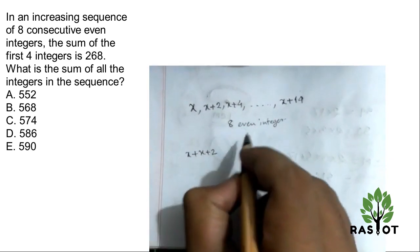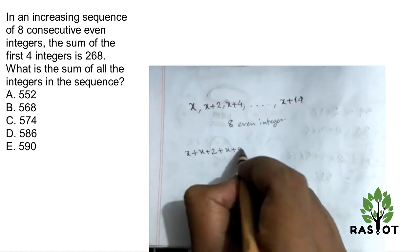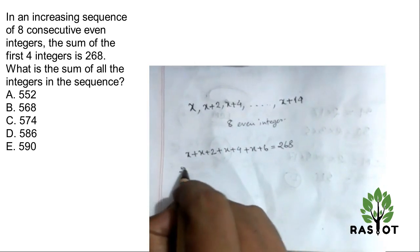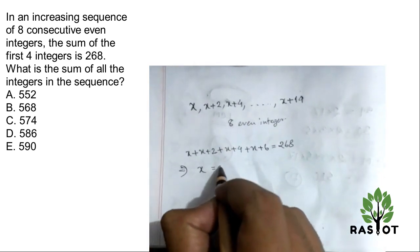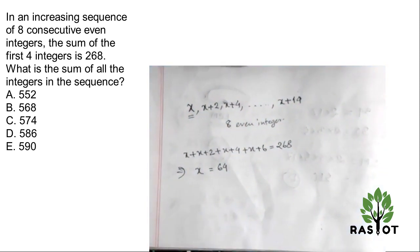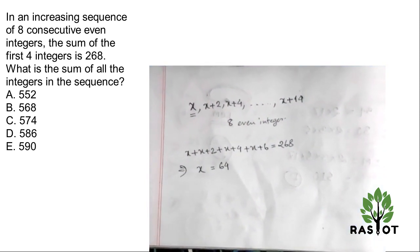x plus x plus 2, the first 4, x plus 6 is equal to 268. Now we have solved, x is equal to 64. It means that the first even integer is 64.